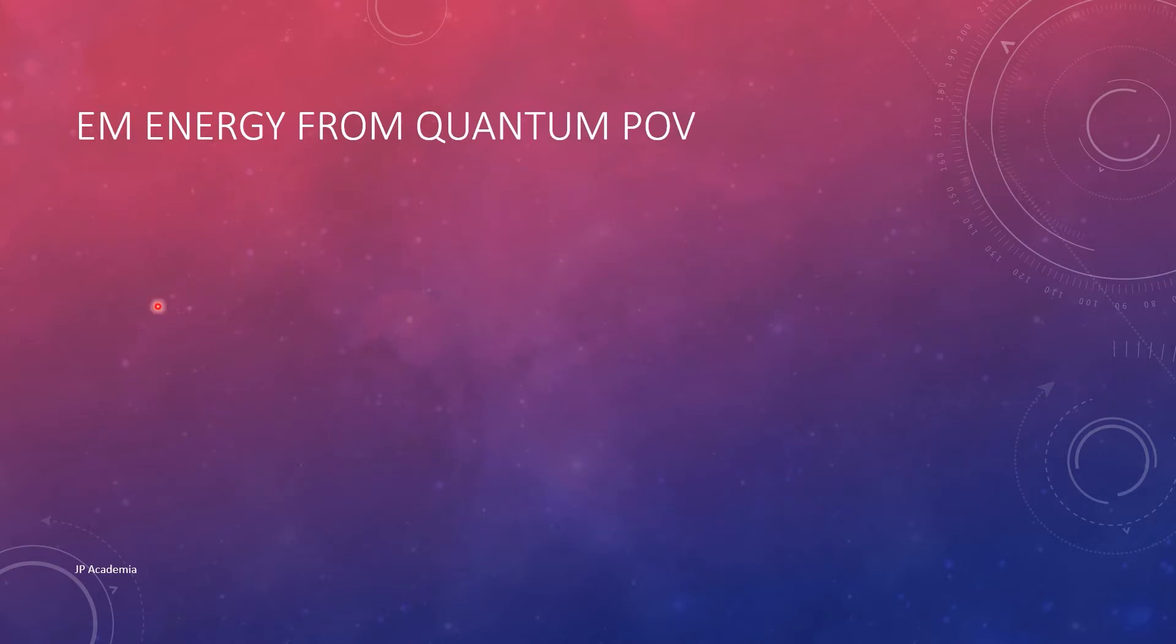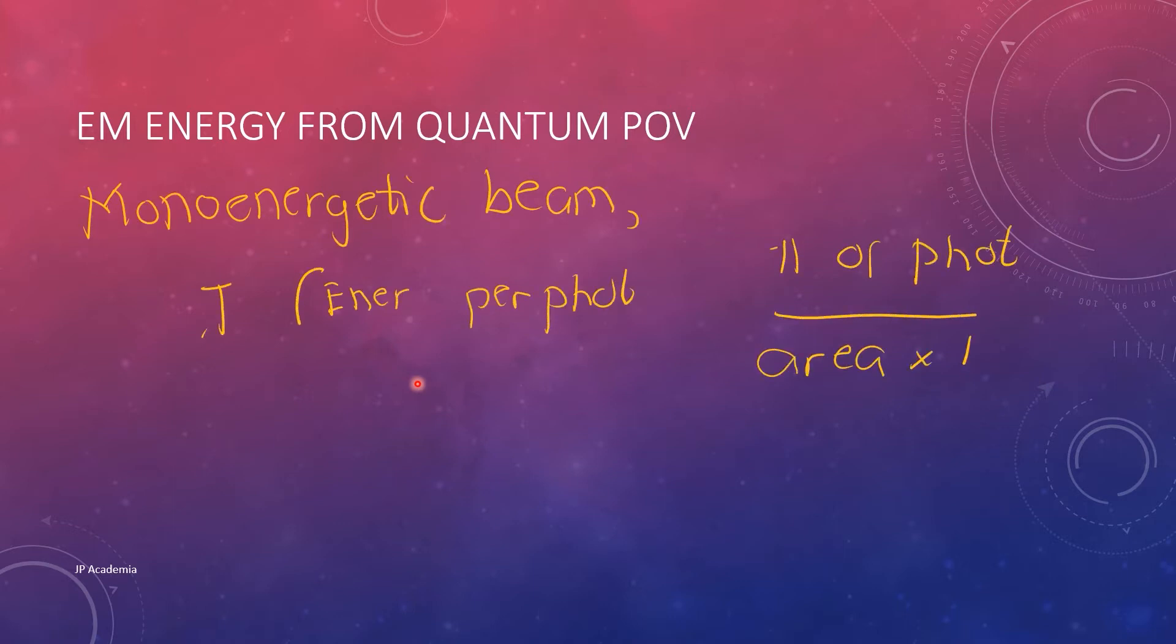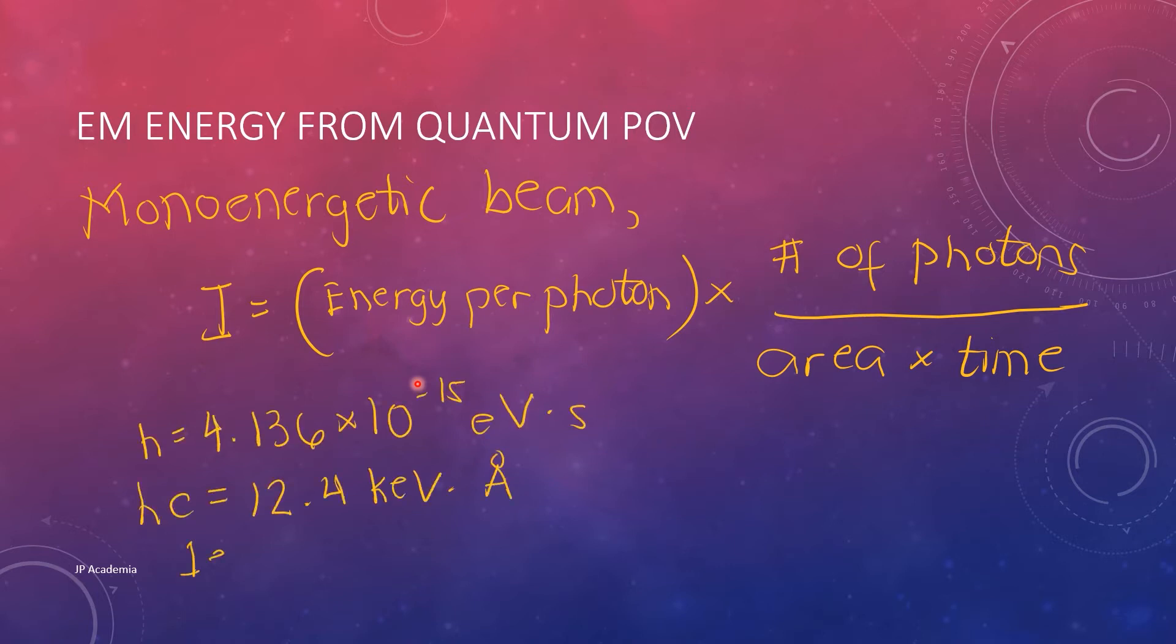If we have a mono-energetic beam, the intensity I is proportional to the number of photons crossing a certain given area per unit time. Note that we have the following useful expression also in terms of calculation.